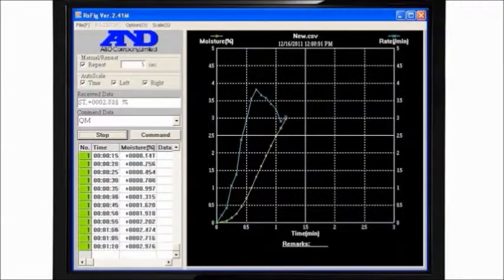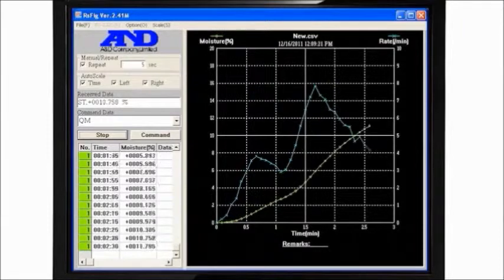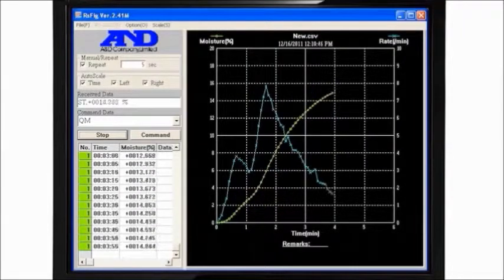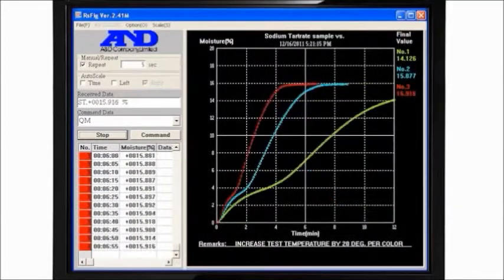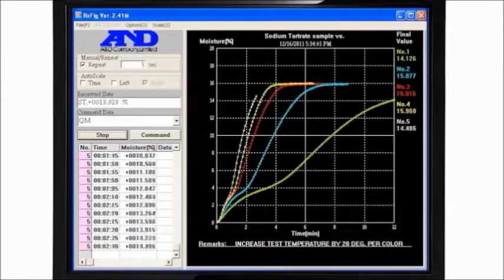Here, WinCT plots moisture content as it reaches its final value and the change in moisture rate approaches zero, indicating the sample is now dry. Successive measurements at different temperatures are graphed in different colors.